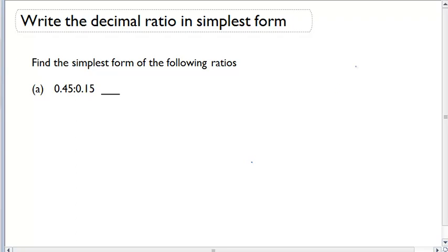In order for it to be in simplest form, it has to be a ratio of two whole numbers. So let's first make these into two whole numbers.